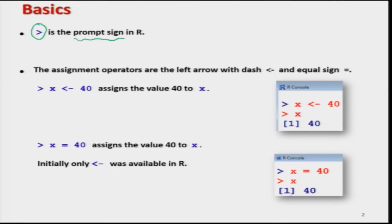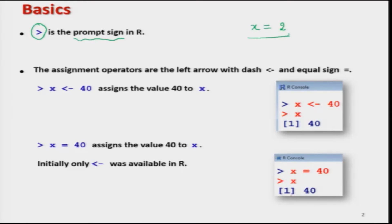One thing I would like to clarify is that when we are trying to assign a value to a variable, in mathematics we always write, for example, x equal to 2. The same thing is followed in R also — suppose I have a variable x and I want to assign the value 2 to it, then I would write x equal to 2.